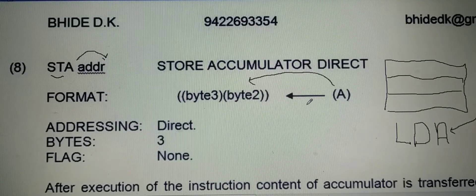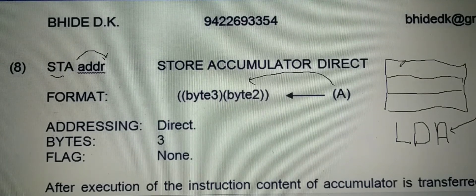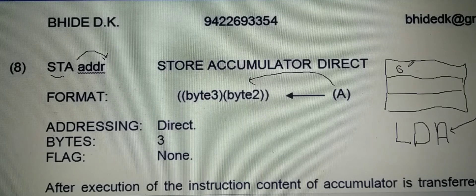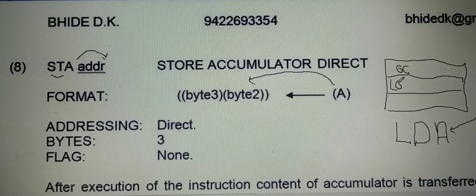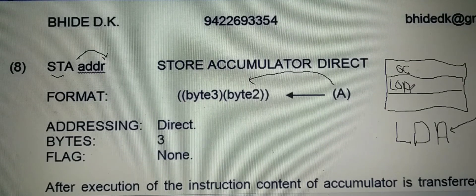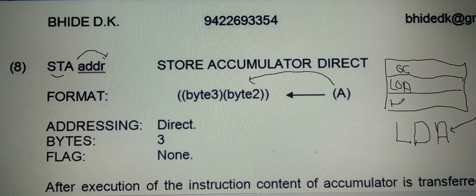This is a 3-byte instruction. The 1st byte of the instruction is the operation code. The 2nd byte of the instruction is the low order address. And the 3rd byte of the instruction is the high order address.